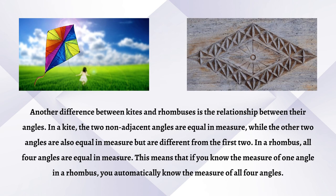Another difference between kites and rhombuses is the relationship between their angles. In a kite, the two non-adjacent angles are equal in measure, while the other two angles are also equal in measure but are different from the first two. In a rhombus, all four angles are equal in measure.